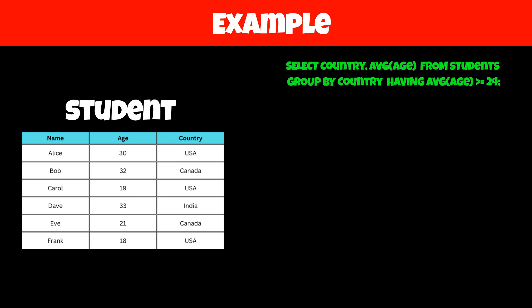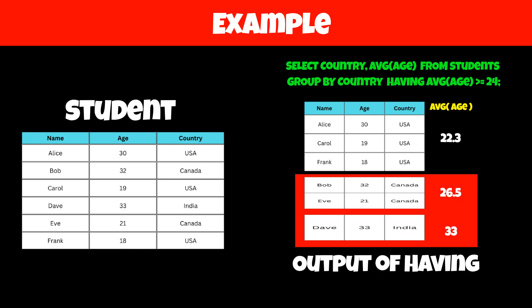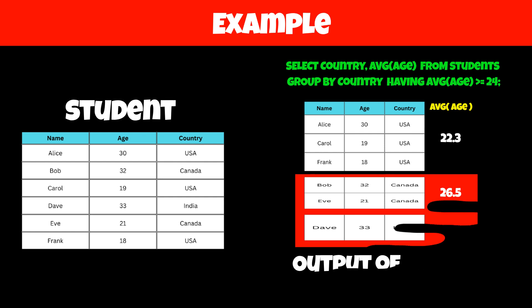GROUP BY will first group the students based on country, and then the HAVING statement will apply a filter on this grouped data. In our example, it will calculate the average age of all students in each country and then return the names of countries where the average age is greater than 24 years.